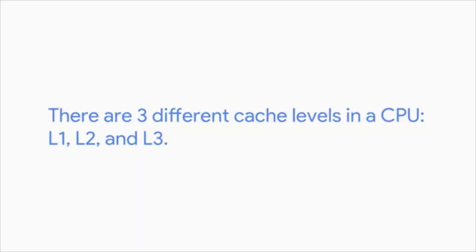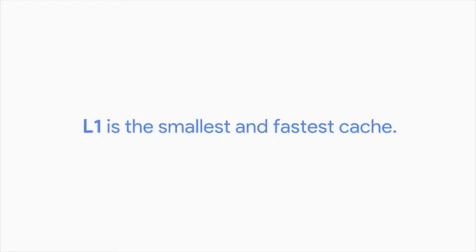Believe it or not, RAM isn't the fastest way we can get more data to our CPU for processing. The CPU also uses something known as cache — it's smaller than RAM, but it lets us store data that we use often and lets us quickly reference it. Think of RAM like a refrigerator full of food: it's easy to get into, but it takes time. Cache is like the stuff we have in our pockets — used to store recently or frequently accessed data. There are three different cache levels in a CPU: L1, L2, and L3. L1 is the smallest and fastest cache.